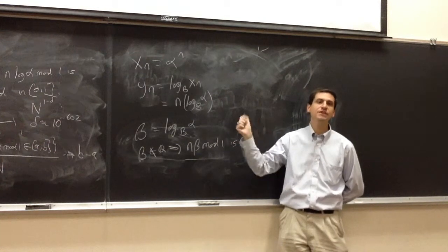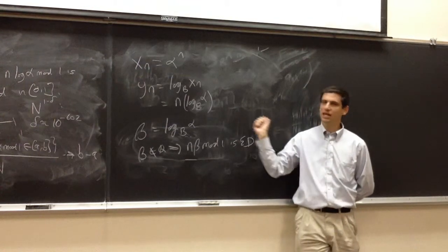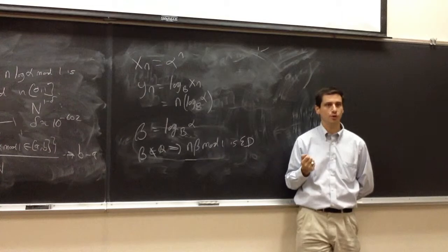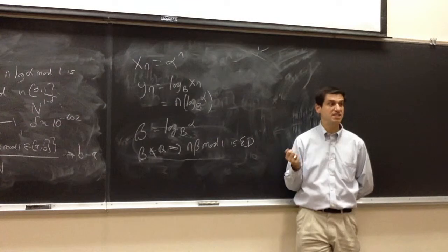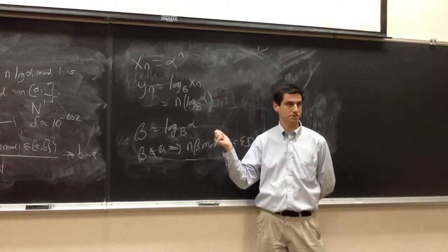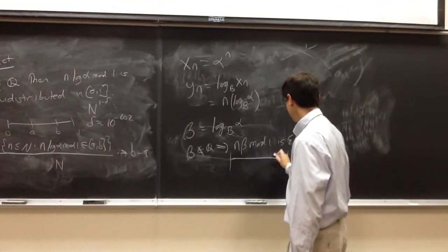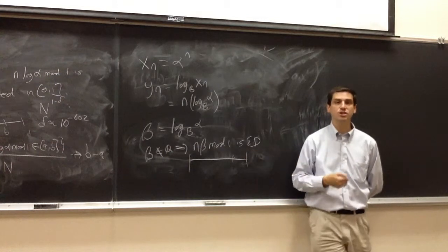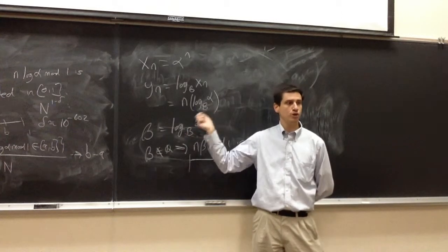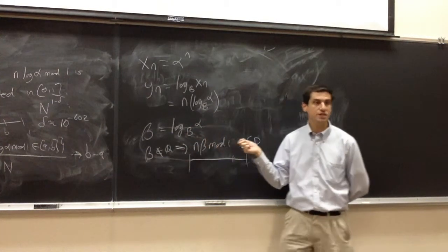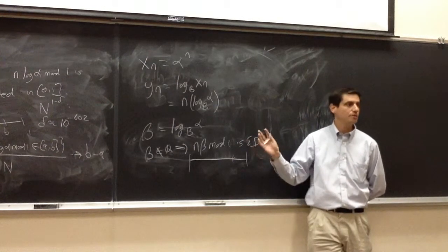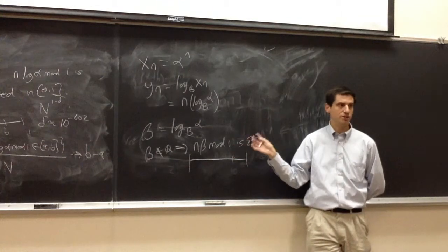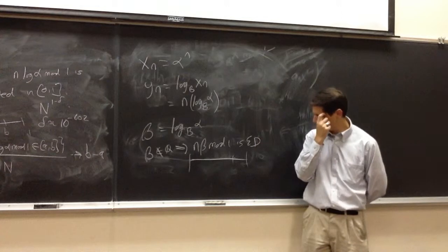Equidistribution means it falls evenly over all of [0,1]. A weaker condition is density: it falls all over [0,1] in the sense that for any point you can find infinitely many sequence values arbitrarily close to it. Density is much easier to prove but not enough for Benford behavior. In chapter 12 we'll talk about how to prove density, then how to go from density to full equidistribution. Sometimes when you have a hard theorem, try proving an easier case first to build intuition.